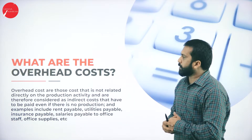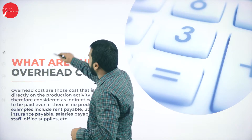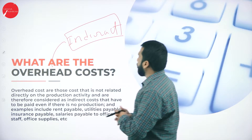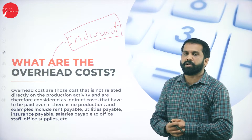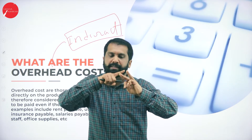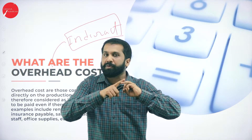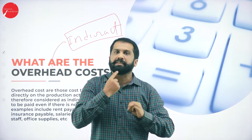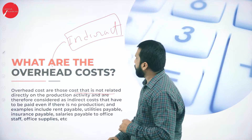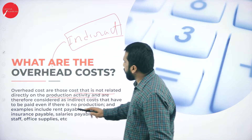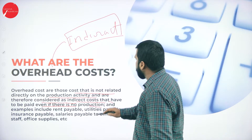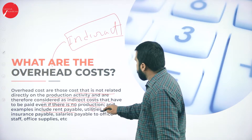Now, what are overhead costs? Overhead means remember — it is always indirect cost. What is indirect cost? Like in the cost sheet, we have done three things: factory overhead, office and administration overhead, and selling and distribution overhead. All these three we call overhead. Overhead costs are those costs that are not related directly to the production activity and are therefore considered as indirect costs that have to be paid even if there is no production. Examples include rent payable, utilities payable.